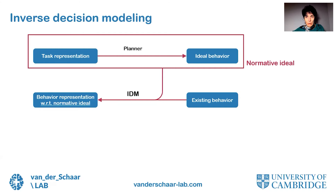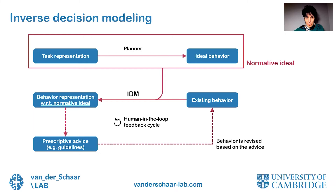In order to do so, IDM leverages the normative ideal, which describes what the human agent or the community think is the best way to solve the decision-making problem at hand. Since the behavior representation obtained by inverse decision modeling is given with respect to this normative ideal, we can easily use it to generate prescriptive advice for humans that would guide them towards their selected normative ideal — for instance, in the form of new guidelines. On the basis of this new advice, existing behavior would change, after which we can use IDM again to infer a representation of that new behavior and issue new advice. In this way, we can keep improving human behavior in a feedback cycle.